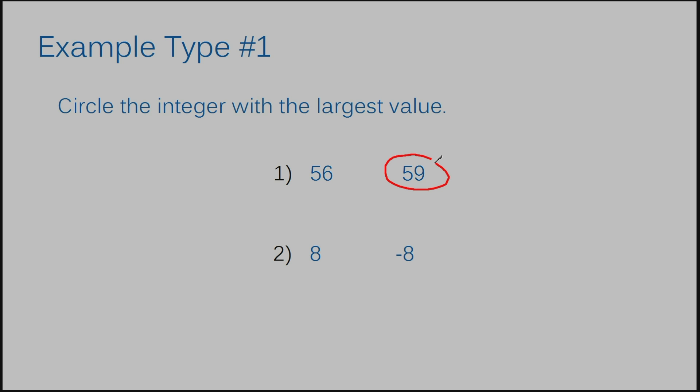But what about this one? We have a negative number. We have eight and we have negative eight. If you remember, negative numbers are less than zero. So although they have the same appearance generally, except for the negative sign, the positive eight is definitely more than the negative eight. The positive eight is like saying you have eight dollars. The negative eight is like saying you owe your friend eight dollars — that's less than eight dollars.